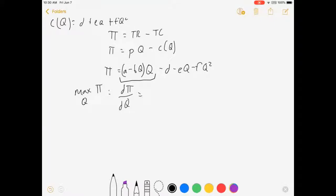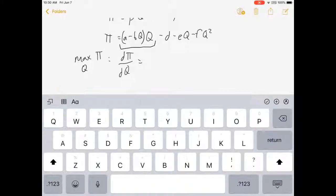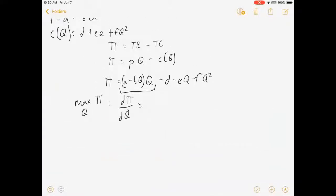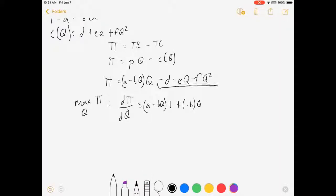I'm going to look at this term first. My product rule is A minus BQ times 1 plus minus B times Q. And then let's see for my second term. Now I'm going to be looking at all of this stuff. That's minus E minus 2FQ.